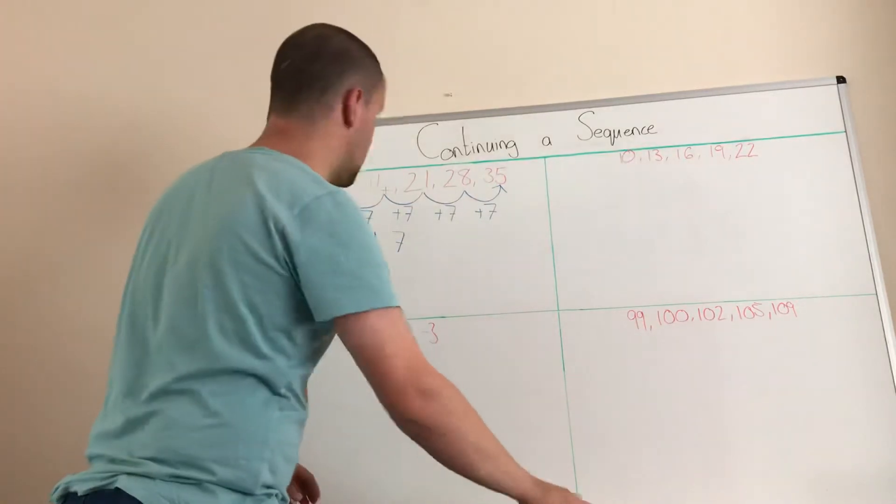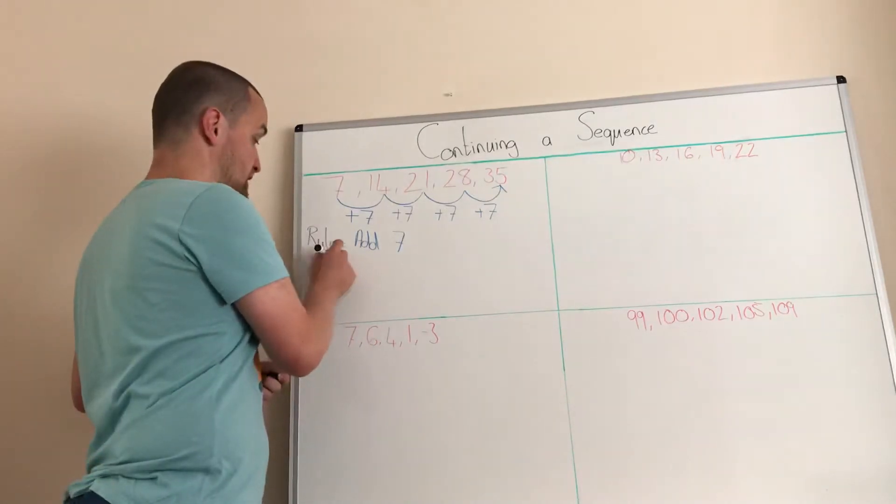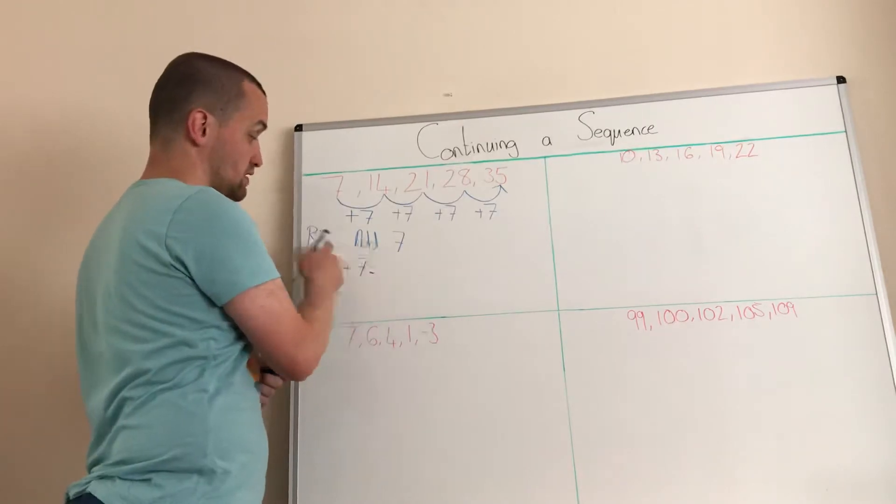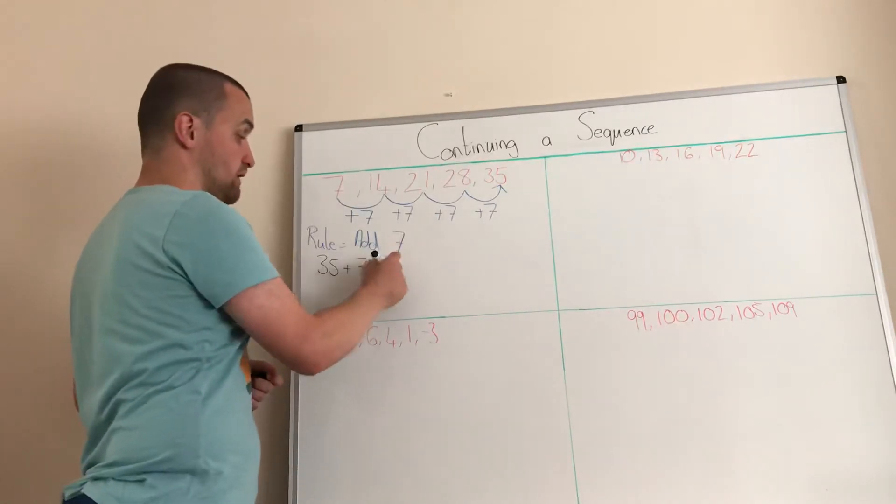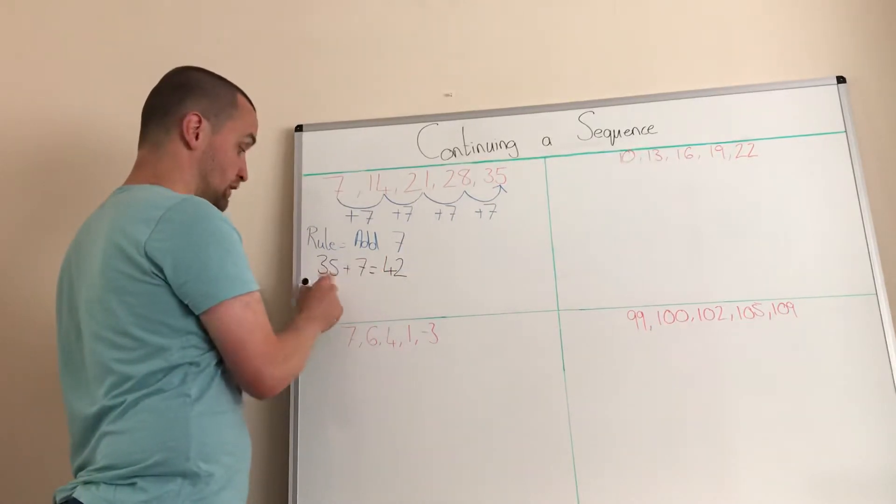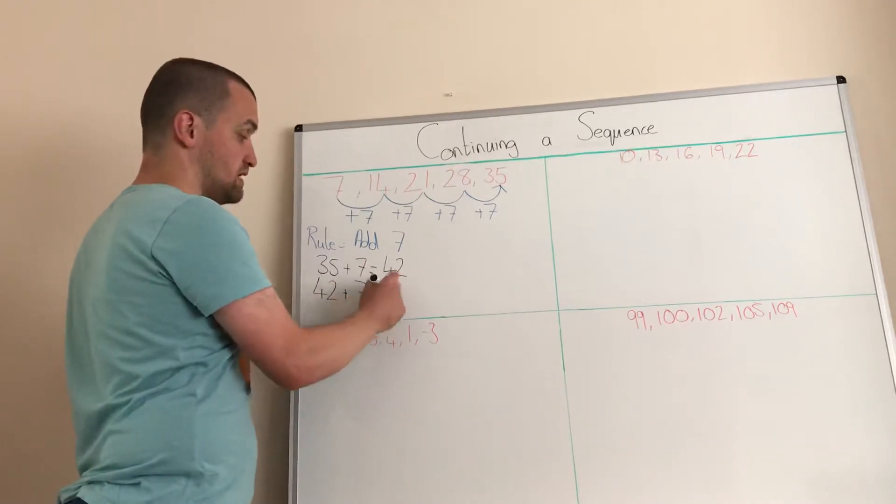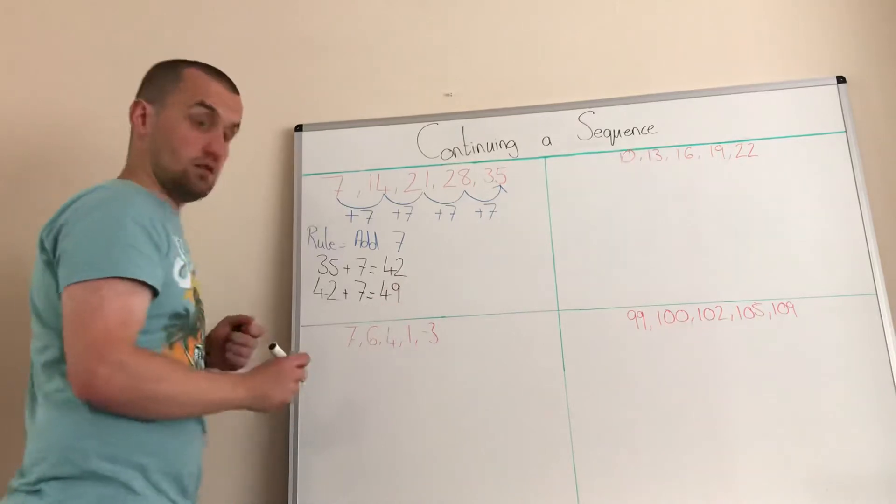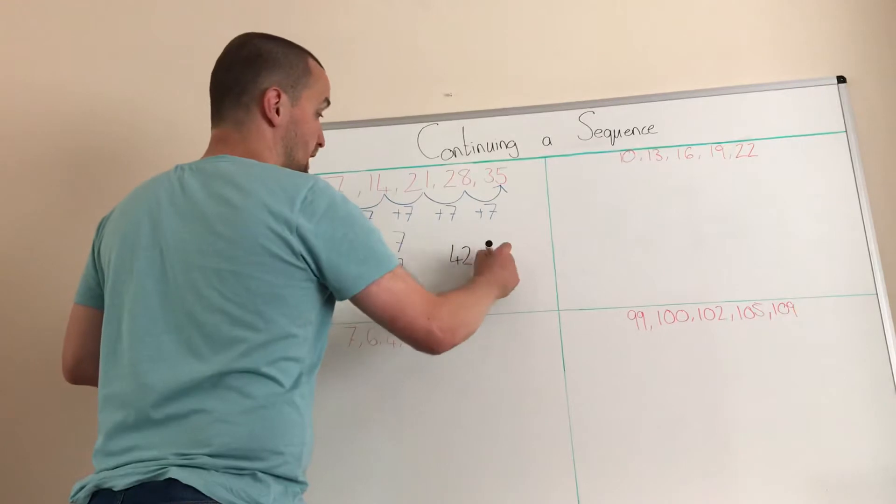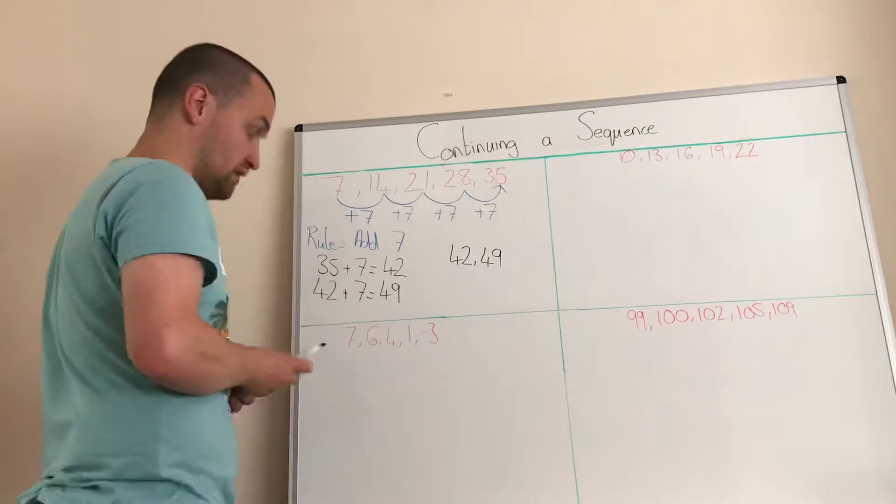So to find the next two terms in the sequence, we're going to do 35, which is the end of this sequence, plus seven, because the rule is add seven, so that's 42. Then we're going to take what we've got here, so we're going to do 42. The rule is add seven, which is 49. So the next two terms in the sequence are 42 and 49. So we found the rule first and then we kept adding on for the amount of terms we need.